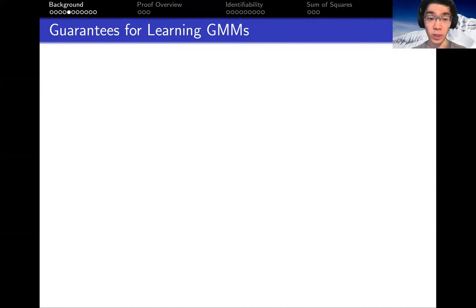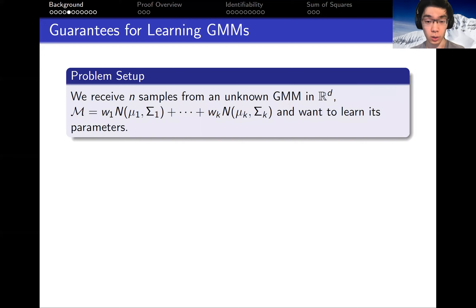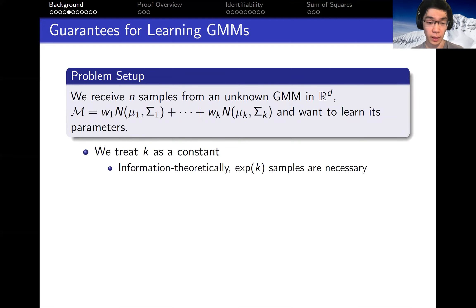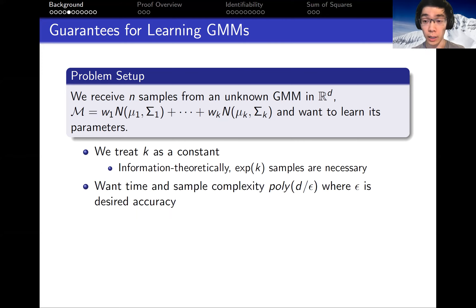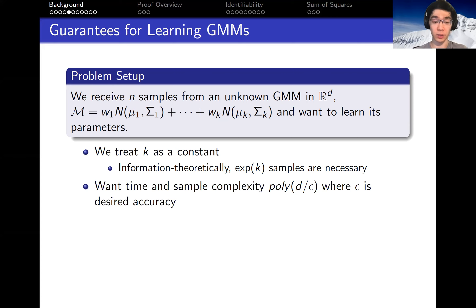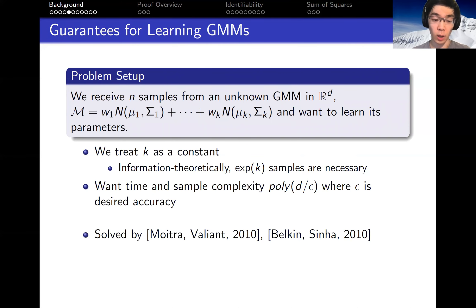Let me say a little bit about previous work on learning GMMs. We need to treat k as a constant, because there are information-theoretic lower bounds showing that exponentially many samples in k are necessary. The dependencies we care about are on d, the underlying dimension, and epsilon, the desired accuracy. We want polynomial time and sample complexity in both.